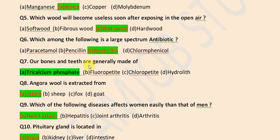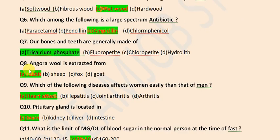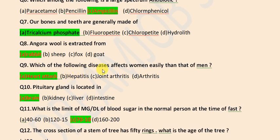Our bones and teeth are generally made of tricalcium phosphate. Angora wool is extracted from rabbit. Which of the following diseases affects women easily than that of men? It is heart attack.